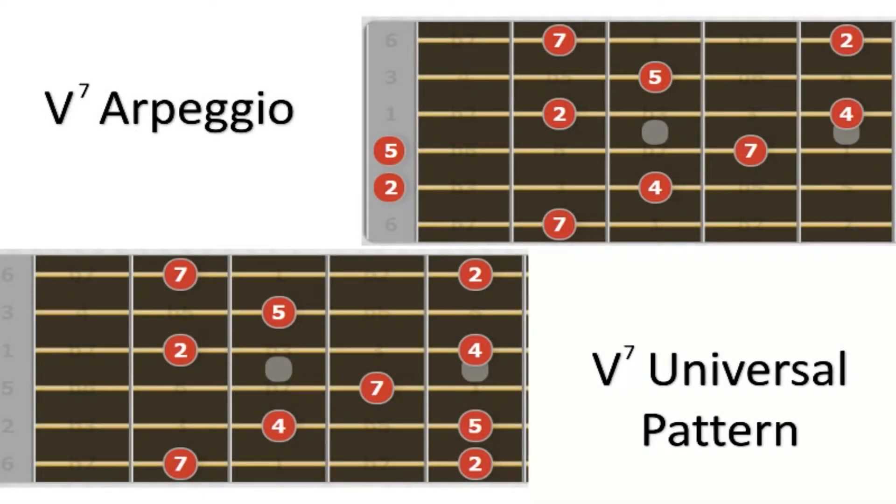The V7 chord, regardless of what key you are in, is made up of the major scale degrees 5, 7, 2, and 4. This first pattern is specific to G major considering it uses open strings. The second pattern, however, can be moved all over the fretboard and used in any key.